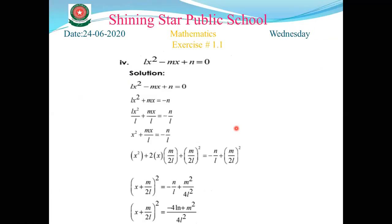Question 3, Part 4. The first step: take the constant to the right-hand side, so it becomes -n. The second step: make the coefficient of x² equal to 1. The coefficient of x² is l, so we divide both sides by l.